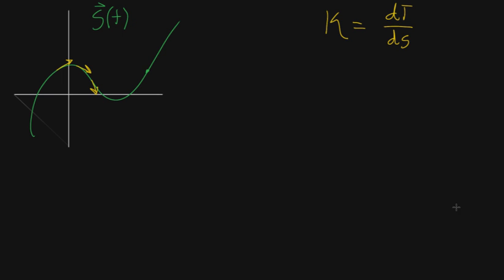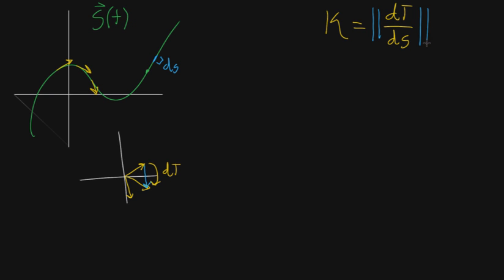What I mean by arc length here is just a tiny step — the size of a tiny step along the curve would be ds. You're wondering: as you take a tiny step like that, does the unit tangent vector turn a lot, or does it turn a little bit? The schematic you might have in mind is a completely separate space where, for each one of these unit tangent vectors, you put them in that space. As you take tiny steps of size ds, what is the change to the unit tangent vector? Because curvature is really just a value — a number — all we care about is the size of that change as you take a tiny step ds.